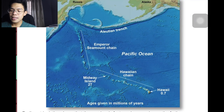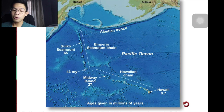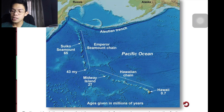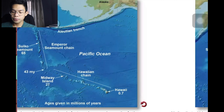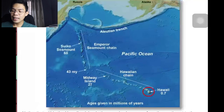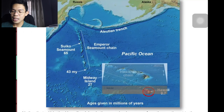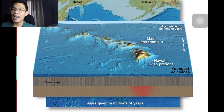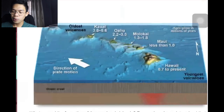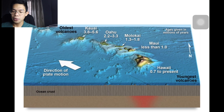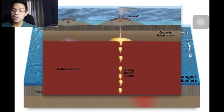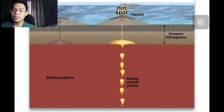Radiometric dating shows that these volcanic features increase in age the farther they are from the Big Island of Hawaii. Hawaii was formed less than 1 million years ago, Midway Islands are 27 million years old, and Suiko Seamount is about 65 million years old. Within the Hawaiian Islands, age also increases from southeast to northwest. What caused the formation of these volcanic islands? Researchers have determined that a mantle plume is located directly under the island of Hawaii.